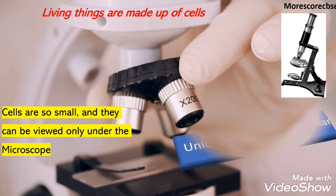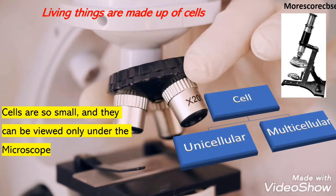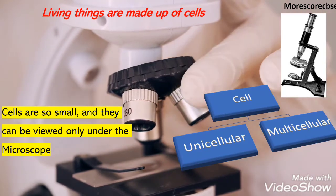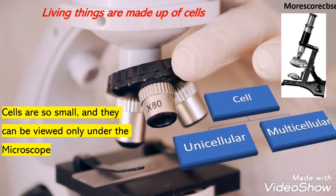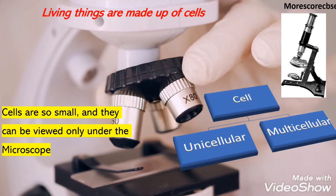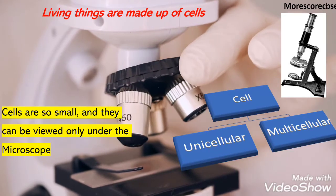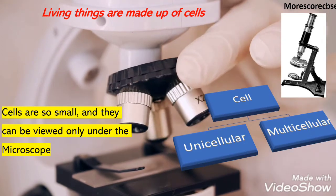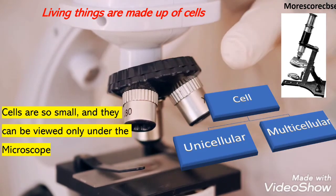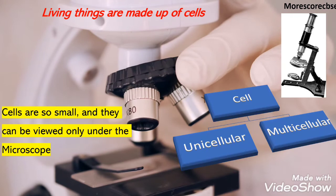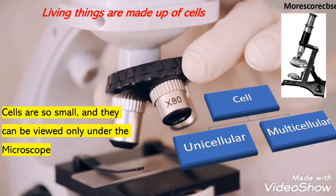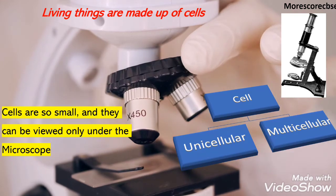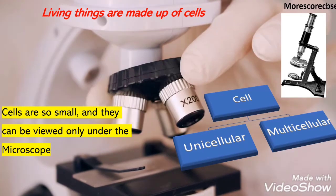The next characteristic is that living things are made up of cells. Cells are the basic building blocks of all living things. Cells provide structure for the body; they take nutrients from food and convert them to energy. Cells are so small they can only be seen under a microscope. Depending on the number of cells, organisms are divided into unicellular and multicellular.